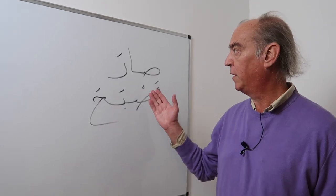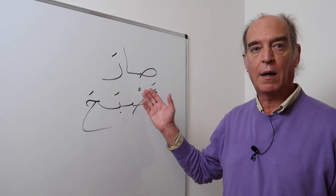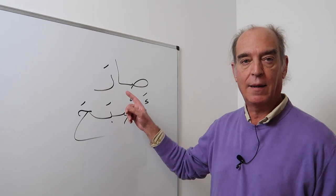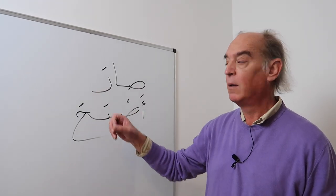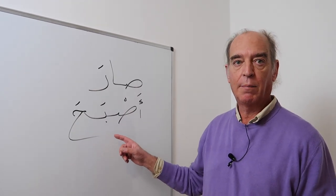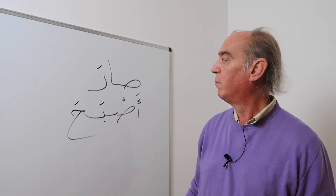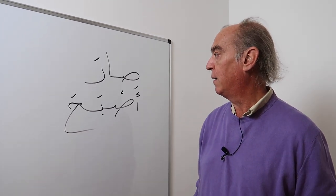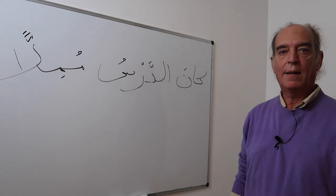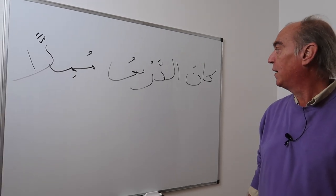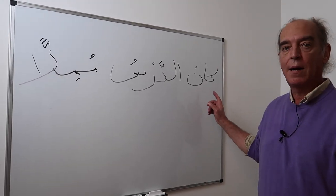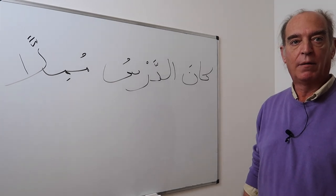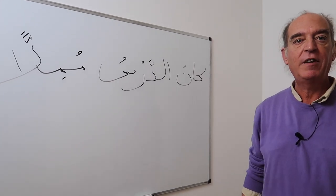Here are two examples of akhawat kana: sara, sara yasiru, and asbacha, asbacha yusbichu. Both mean the same thing: to become. A sentence beginning with the verb kana is considered a verbal sentence — jumla fialiya.